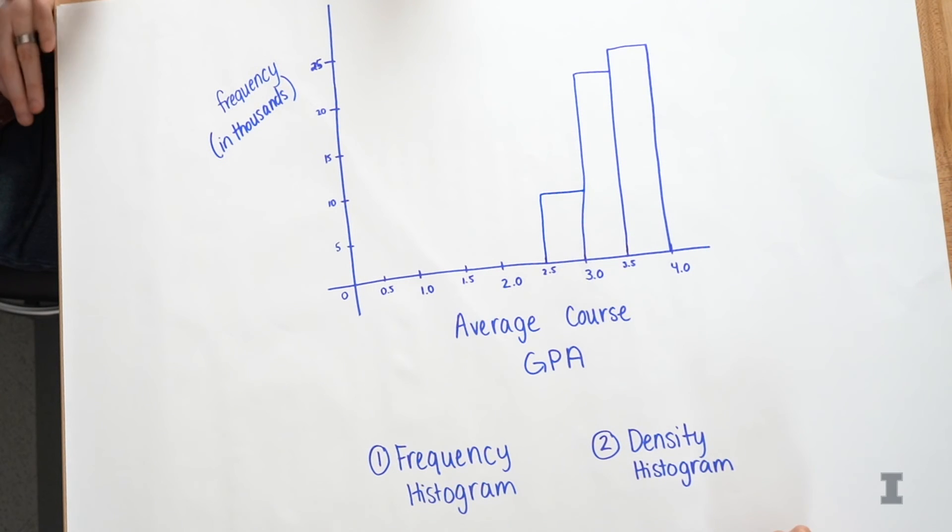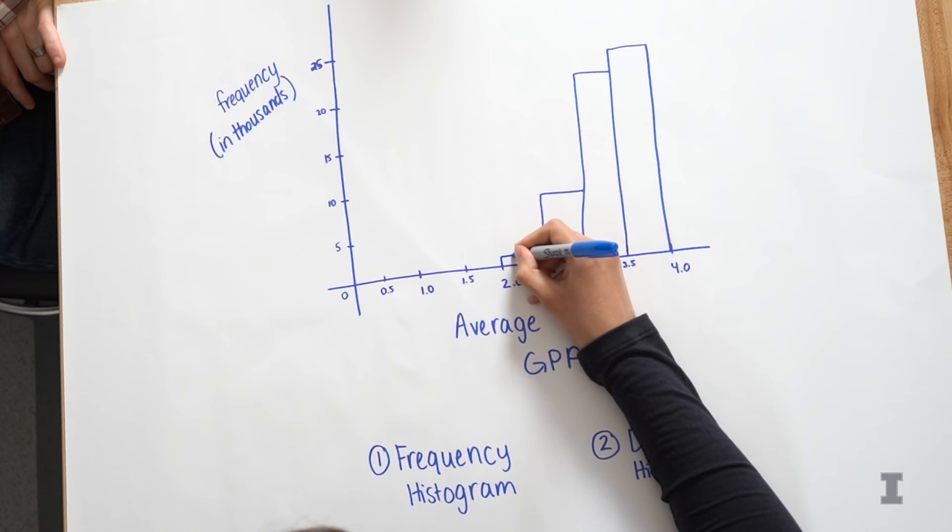And then the next bucket is all of the courses that have a GPA between 2 and 2.5. And that's 1,024 courses. 1,024.